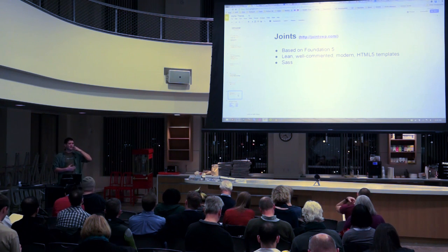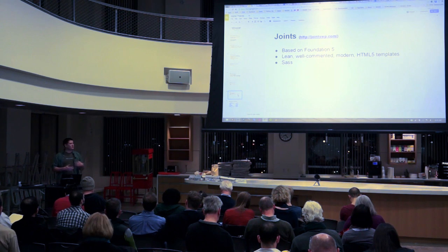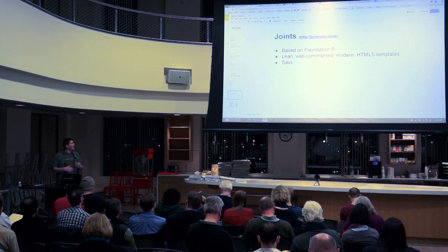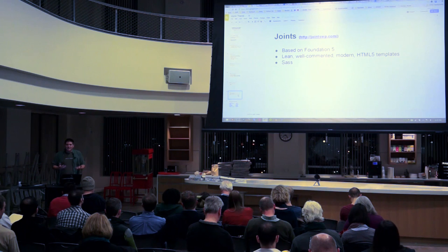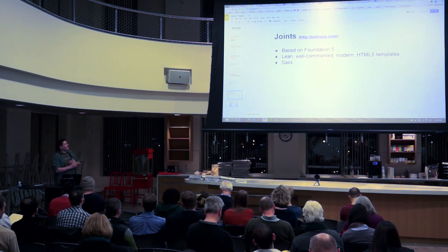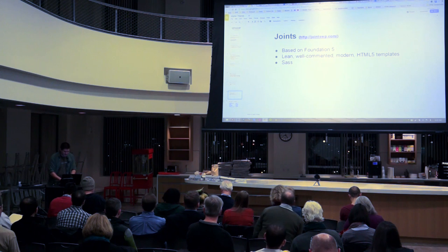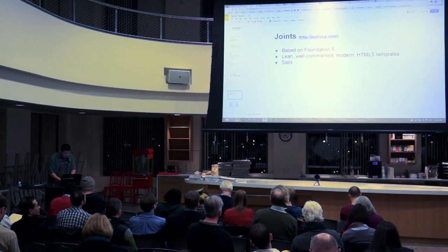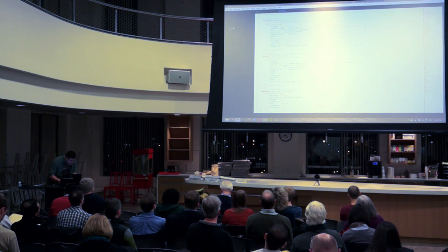Joints WP is well-commented with modular templates. It uses Sass — a lot like LESS. If you've used LESS, you can use Sass. I create my own Grunt file for it — it doesn't come with Grunt, but Grunt's my weapon of choice for now. Before that I was using desktop apps to automatically compile everything. Just a basic Grunt file that navigates to my theme directory, compiles the Sass files and compiles my JS.